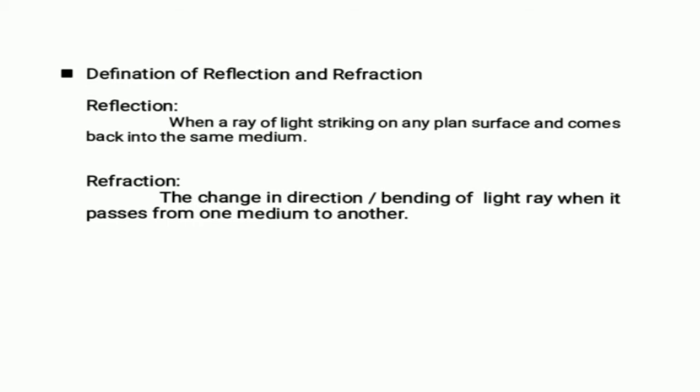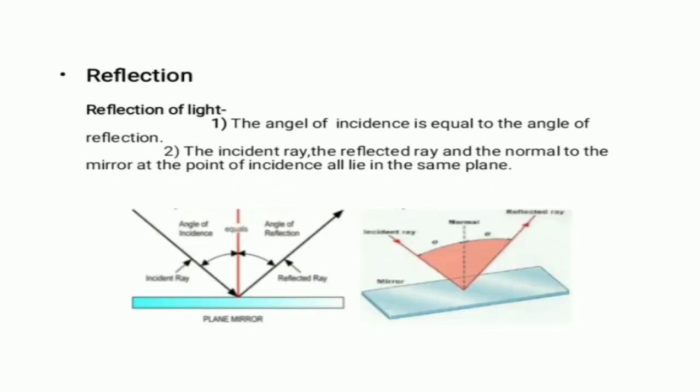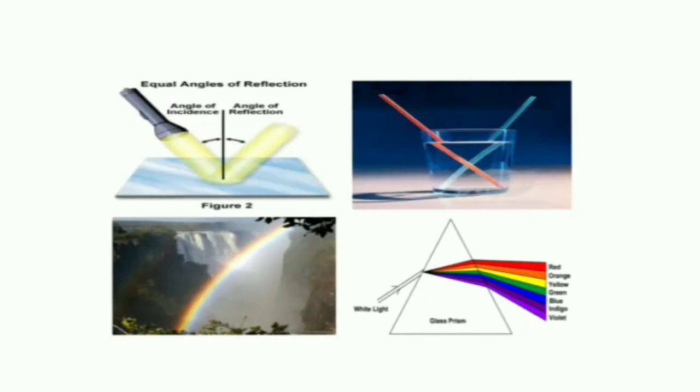Our next point is the laws of reflection. First, the angle of incidence is equal to the angle of reflection. Second, the incident ray, the reflected ray, and the normal to the mirror at the point of incidence all lie in the same plane. So, let us see in the slide how reflection of light occurs.